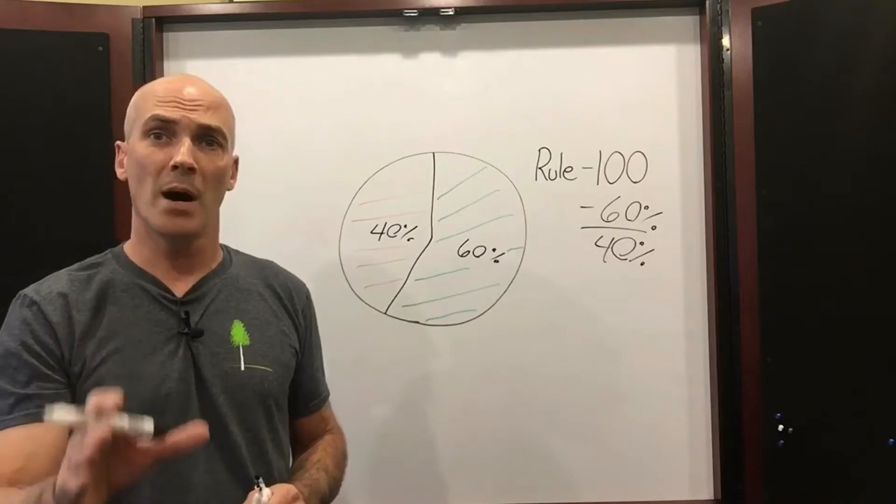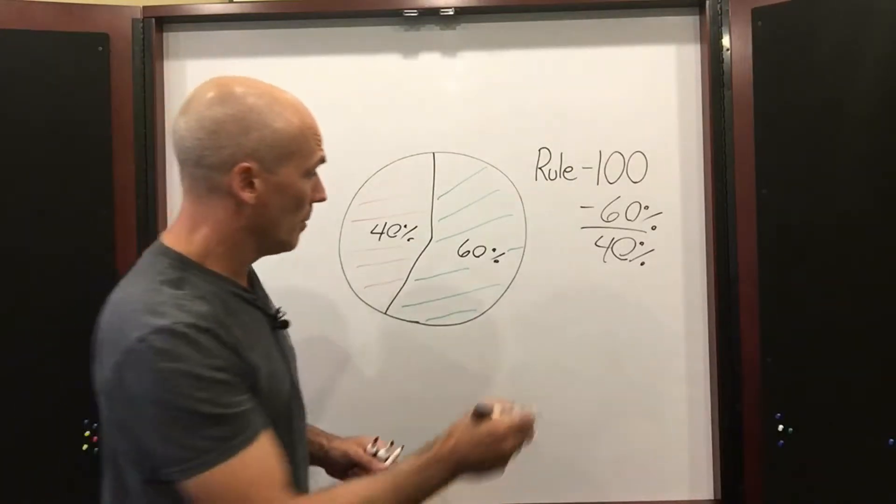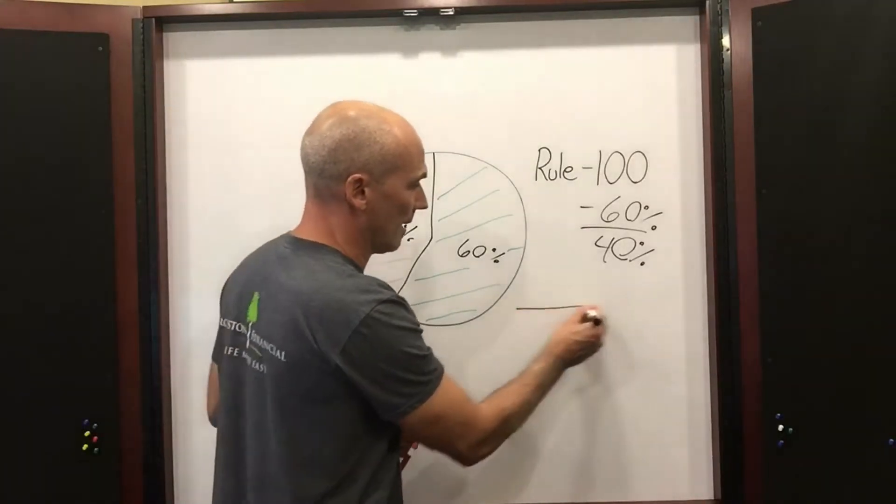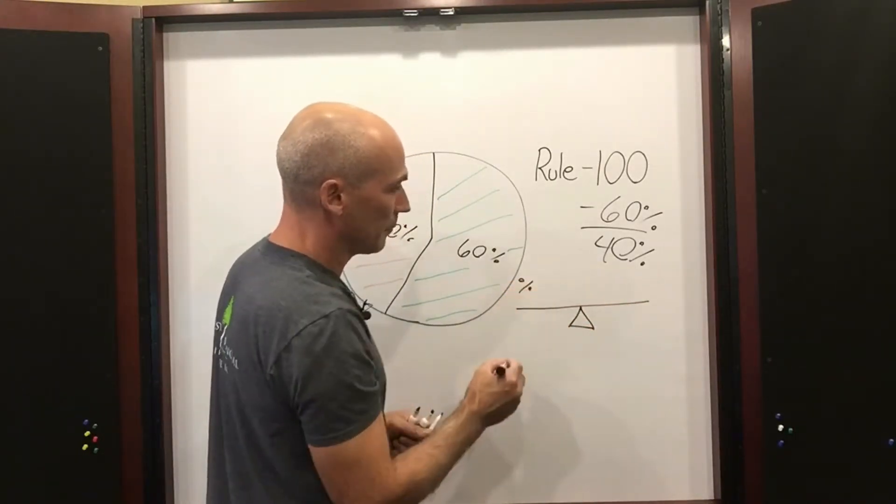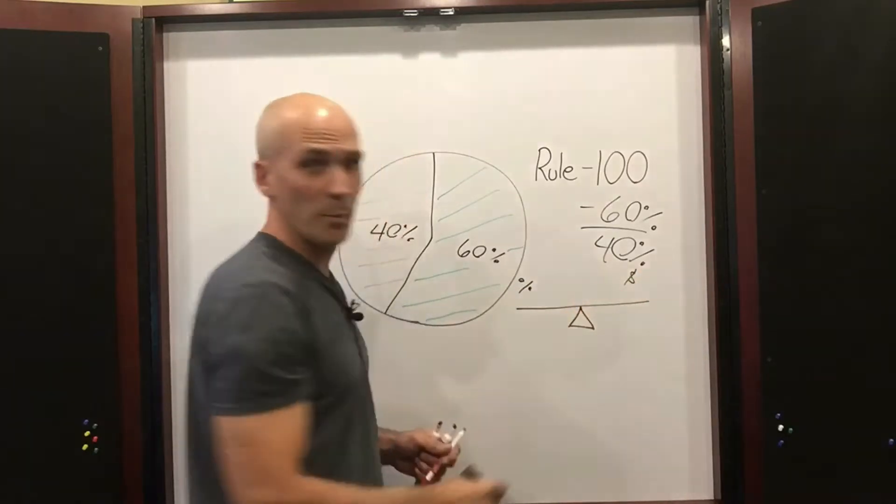Here's the problem with bonds today, interest rate risk. Remember the teeter-totter on a playground? Here it is. One side goes up. On the left-hand side, we have interest rates. On the other side, we have bond prices.